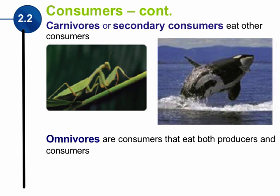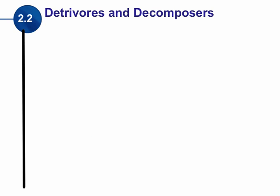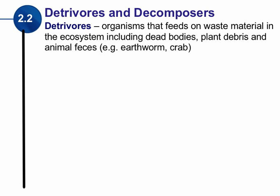The nutrients within an ecosystem will eventually work their way back to the producers and get back into the ecosystem. Carnivores, omnivores, or herbivores — primary or secondary consumers — will eventually transfer their nutrients back to producers. How do those nutrients get back? It comes from the detrivores and decomposers: the organisms that feed on waste material.